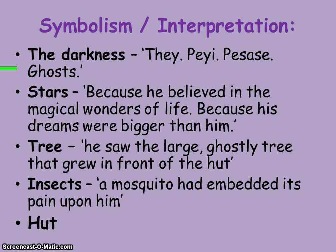If we look at the symbolism, I've put here the darkness. At the beginning of the story, Anil is lying on his mat, he's bursting for a wee, and he's looking up at the sky. He doesn't want to leave the hut because it's dark and he's scared of ghosts — he's really scared and doesn't want to go out there. That's typical of children that age, a bit afraid, like the boogeyman. But he has this fascination for stars, and he probably lies there looking through the holes in the roof. The quotation here is: 'he believed in the magical wonders of life because his dreams were bigger than him' — such a telling line.